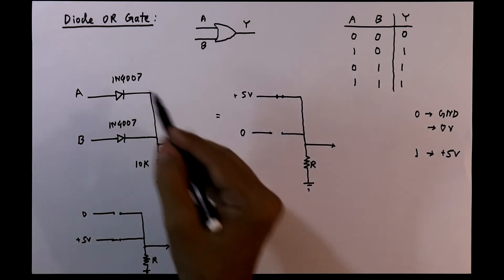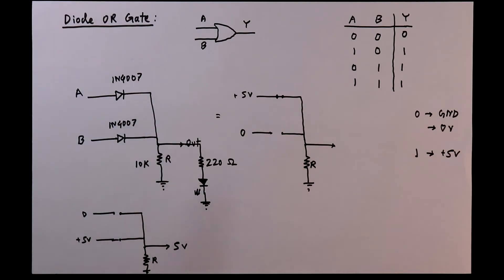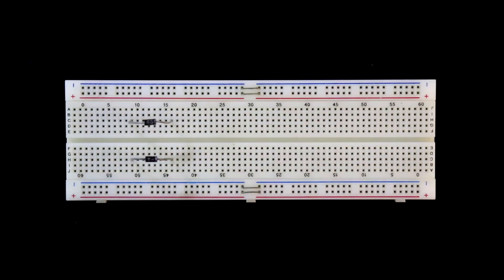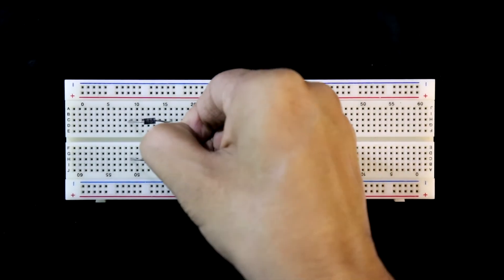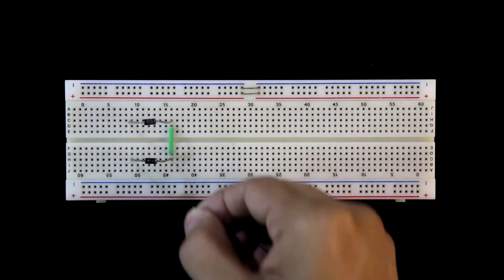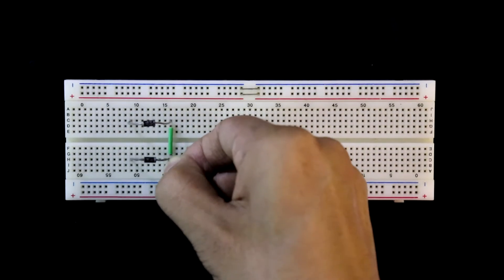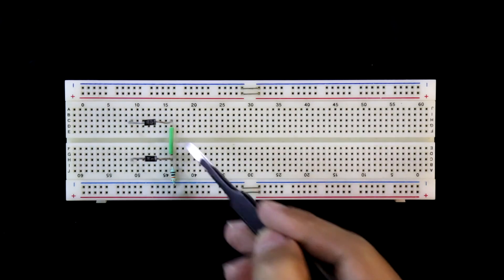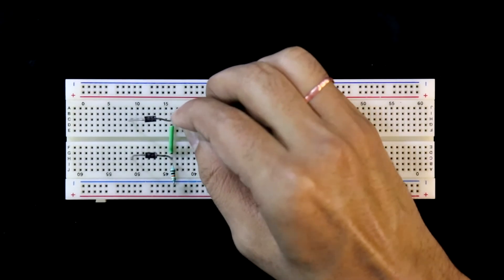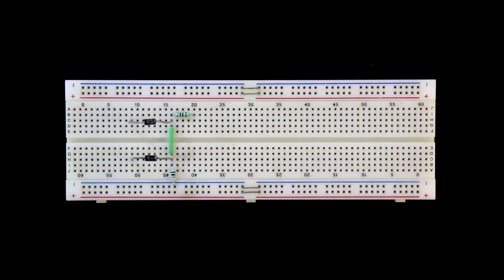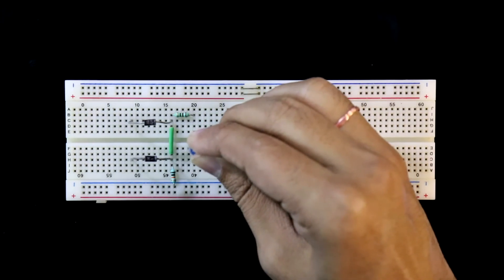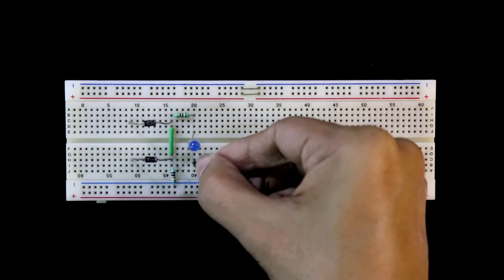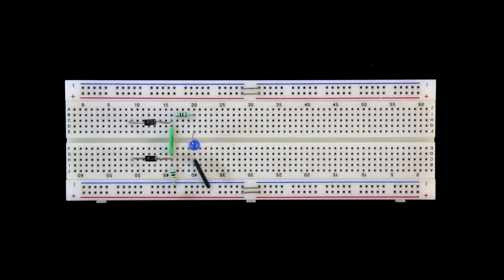According to the circuit, we will connect the components. The first and second diodes have both cathode pins connected together. With this point, a pull-down resistor of 10 kilo-ohms is connected. A 220 ohms resistor is then connected, with its positive or anode pin connected to the resistor. The negative pin or cathode pin of the LED is connected to ground.